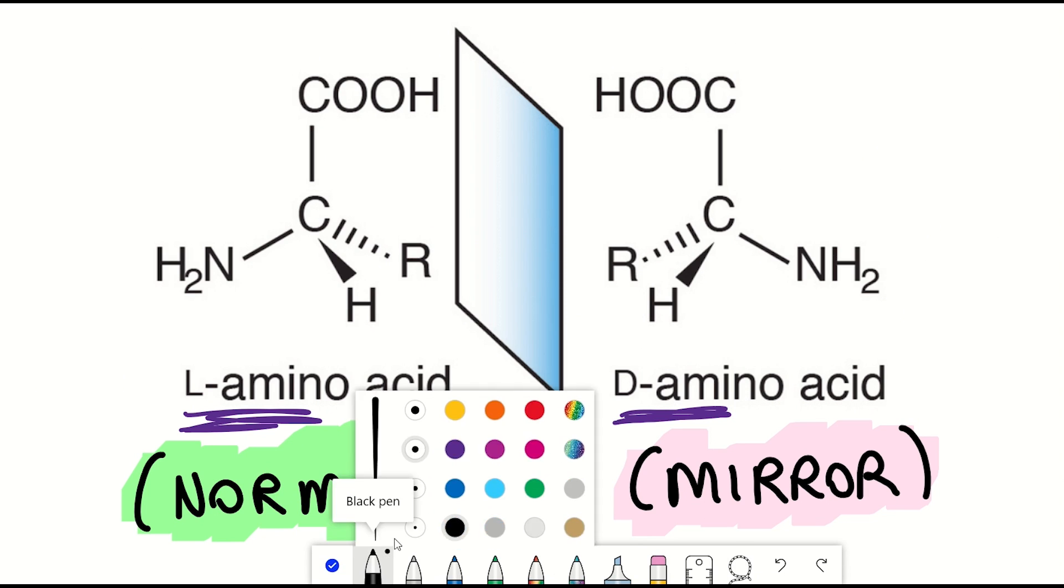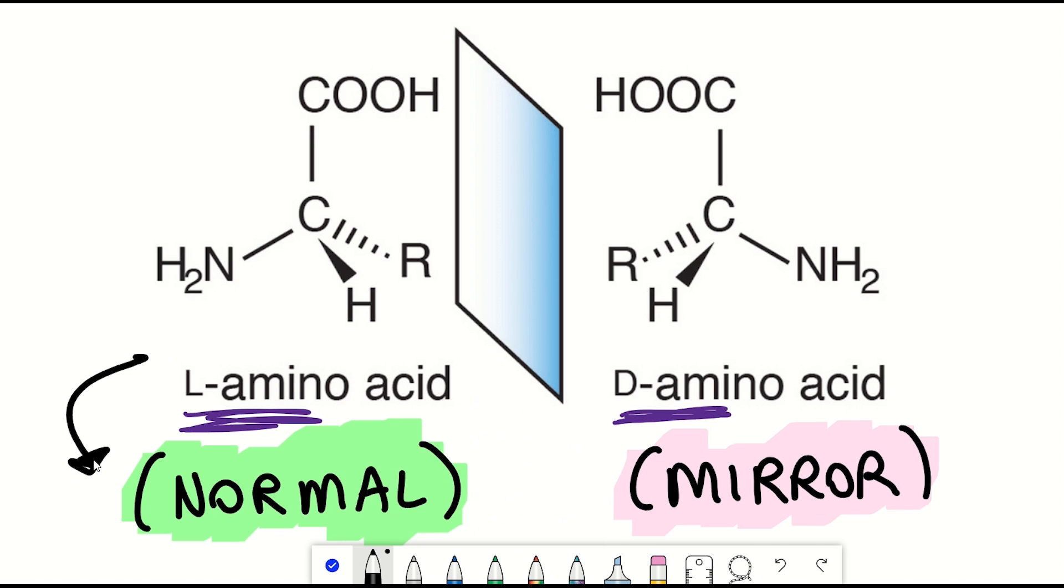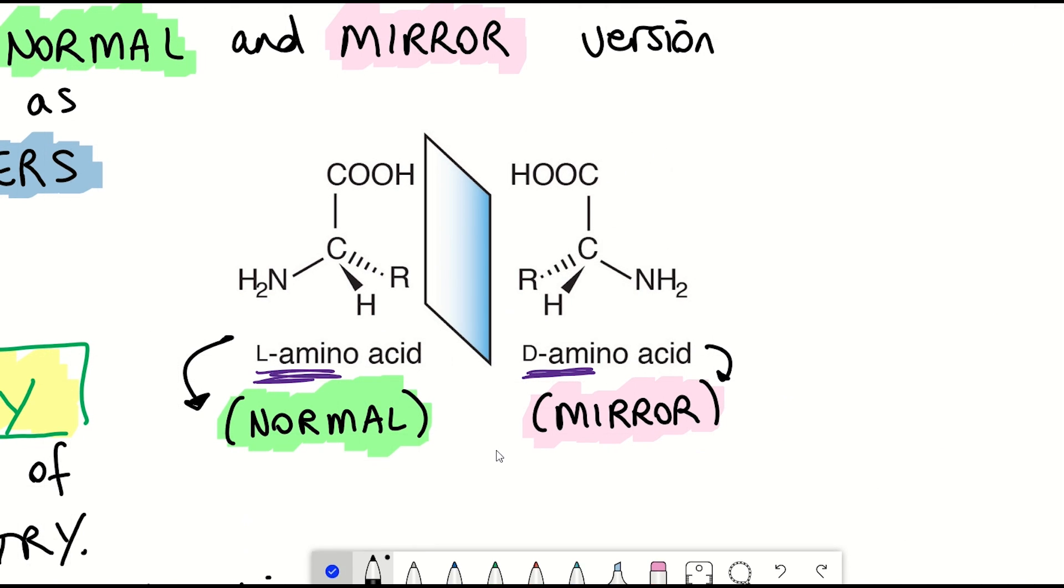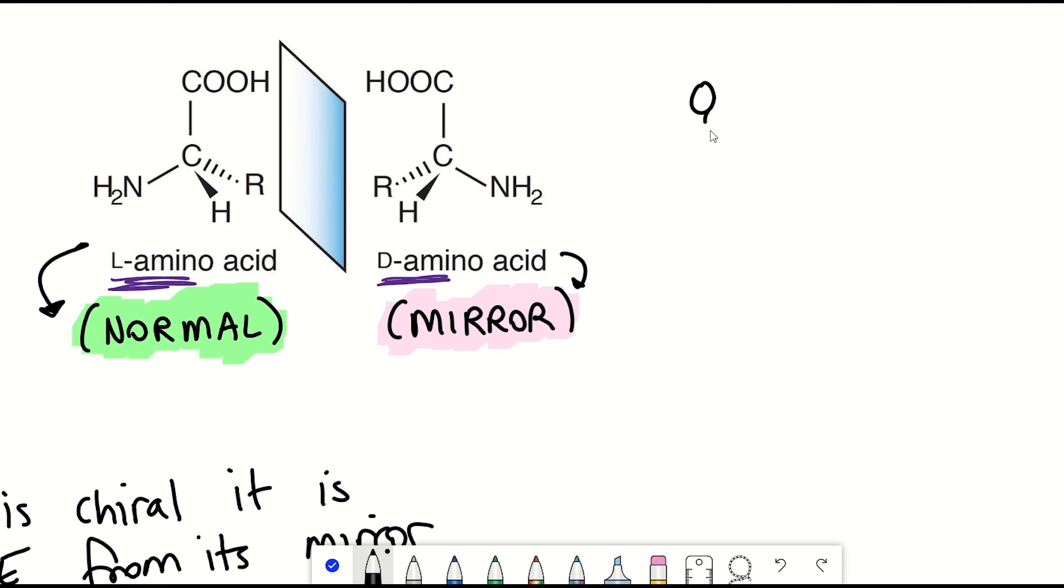And so one of these versions is known as L-amino acids, and that makes up all of the proteins that are found in our natural world. And then the other version, this mirror version, is known as the D-amino acids. And the fact that all amino acids in a protein have the L-version gives proteins the property of homochirality.